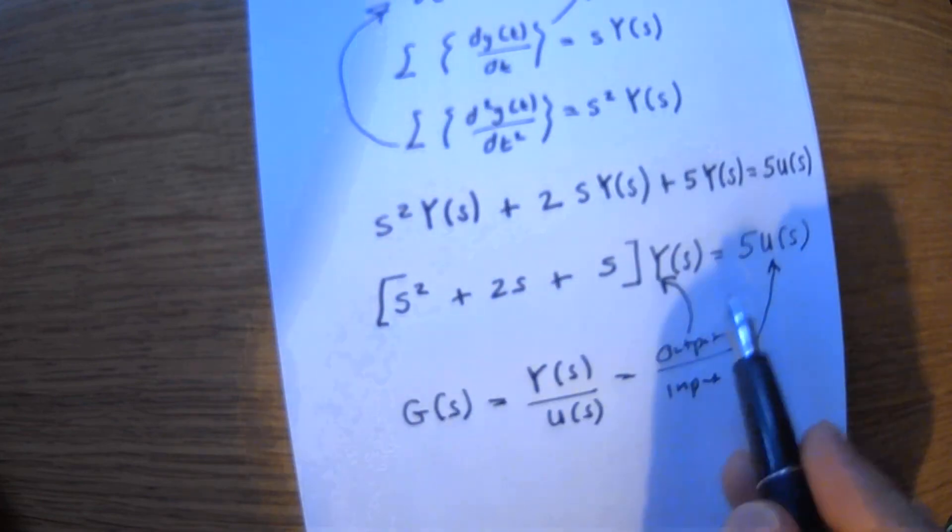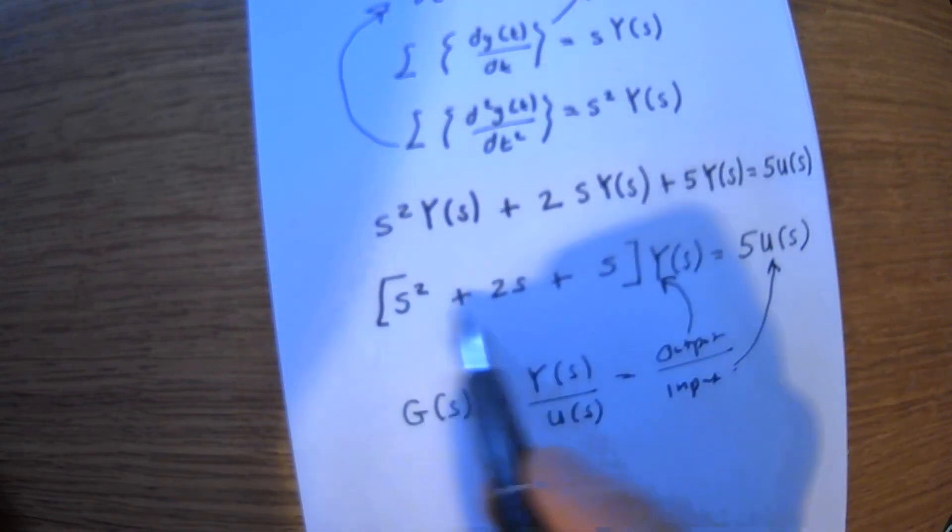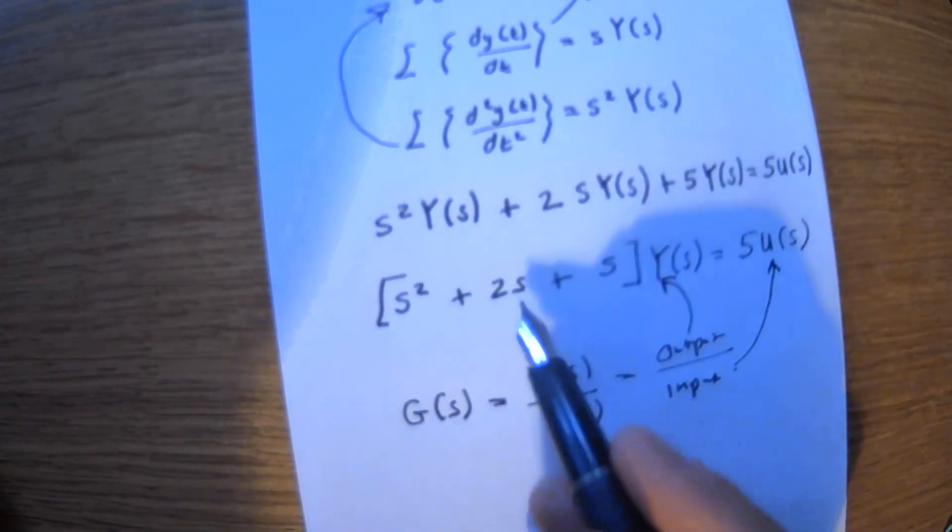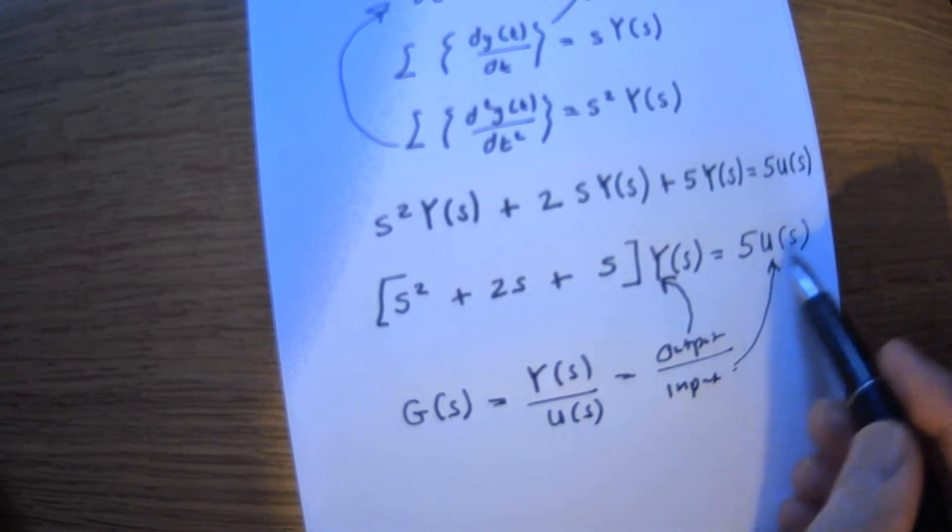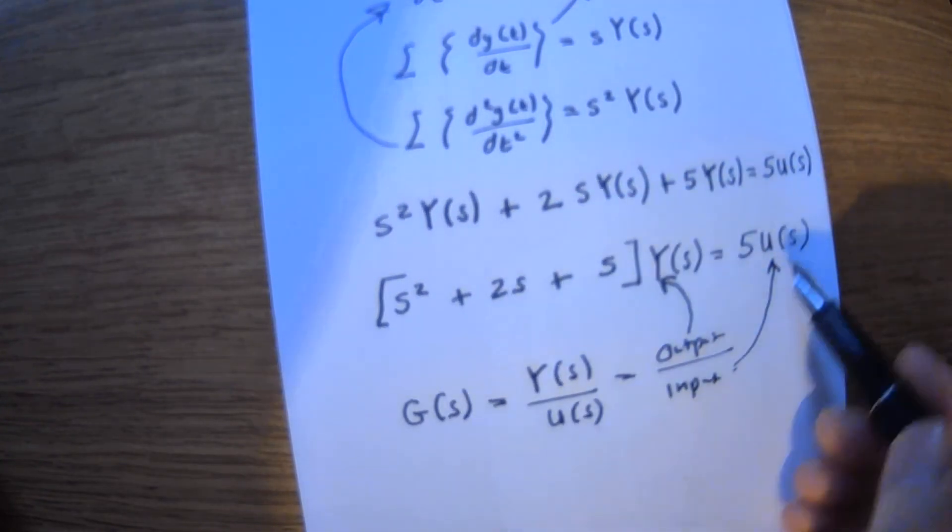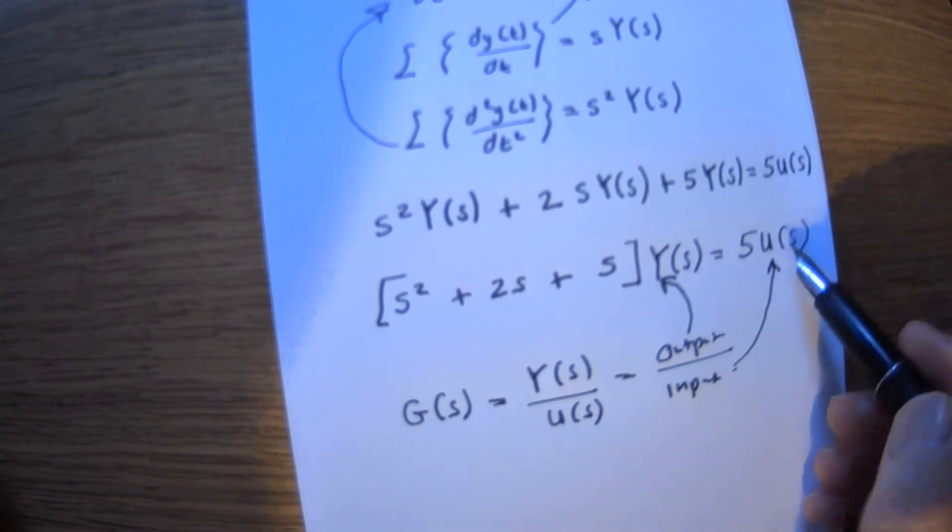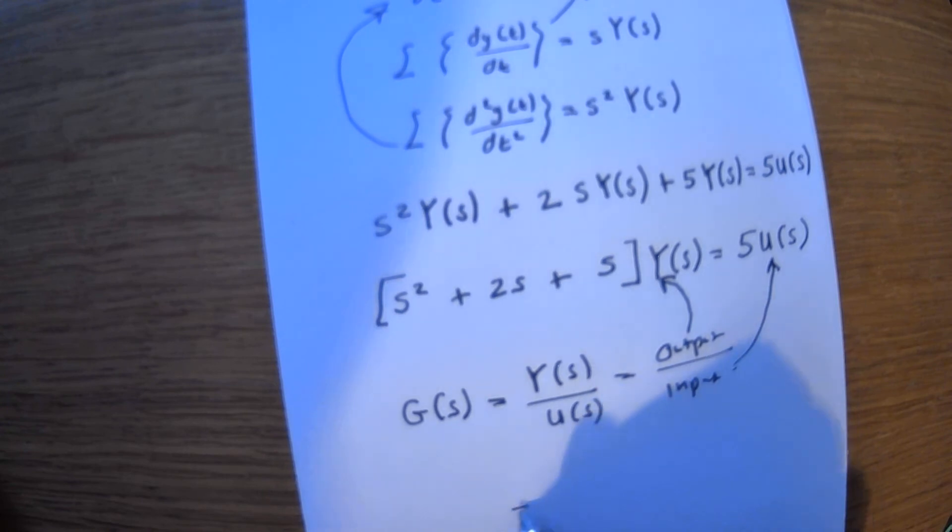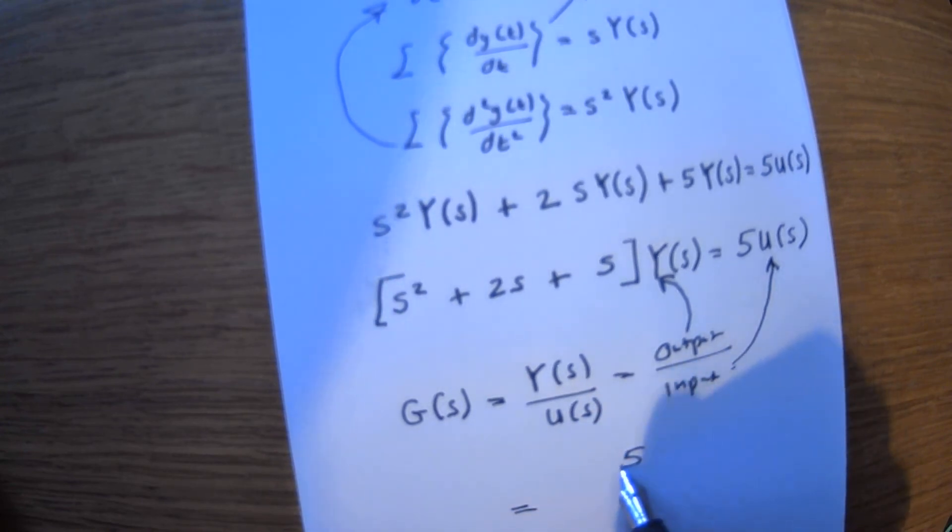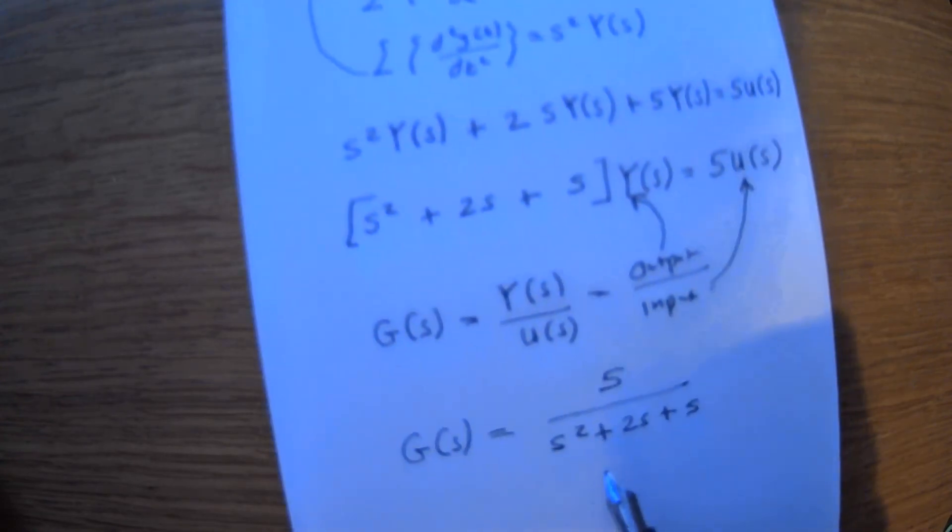So if we then just cross multiply - so if we cross multiply s squared plus two s plus five, that's just going to effectively move over to here, so it'll be five over that. Well, five U s over that, then if we cross multiply one over U s, that'll effectively move that over to here. So then you'll end up with this form: five over s squared plus two s plus five. And that there is your transfer function.